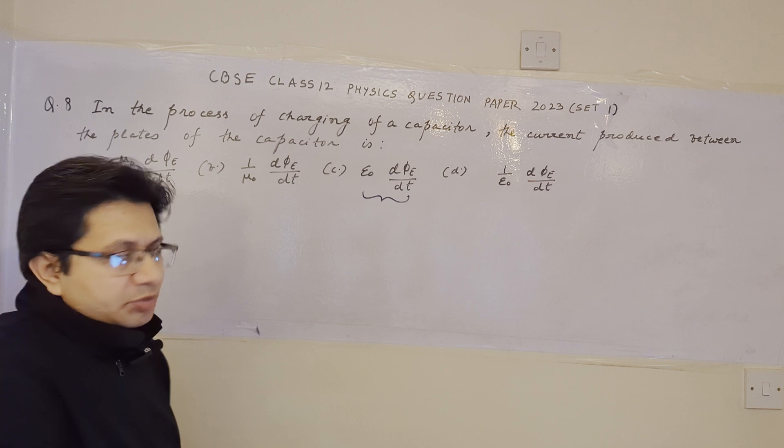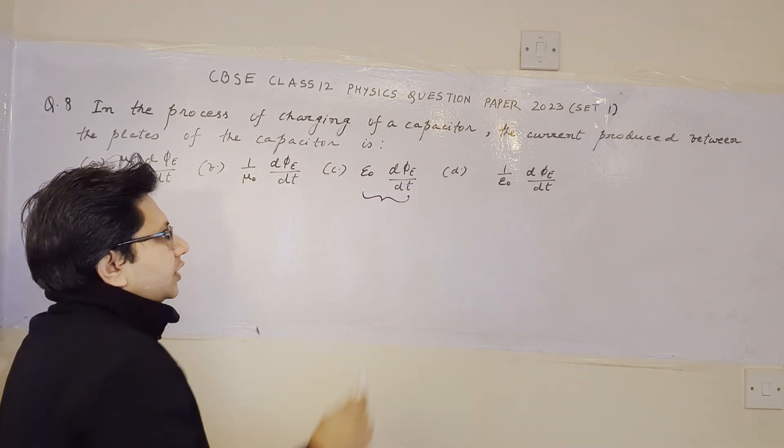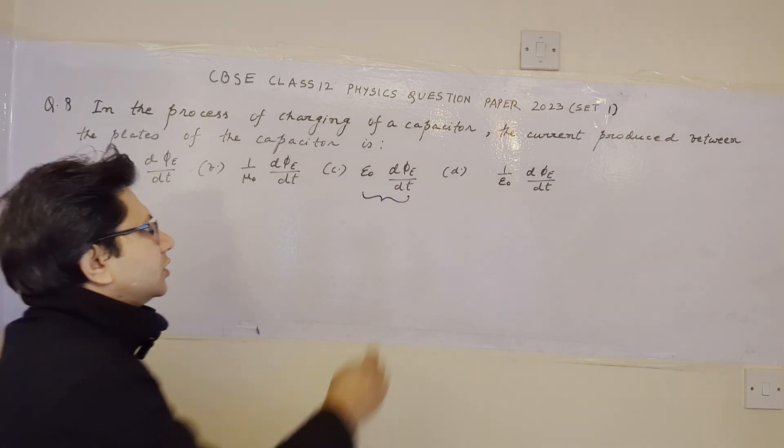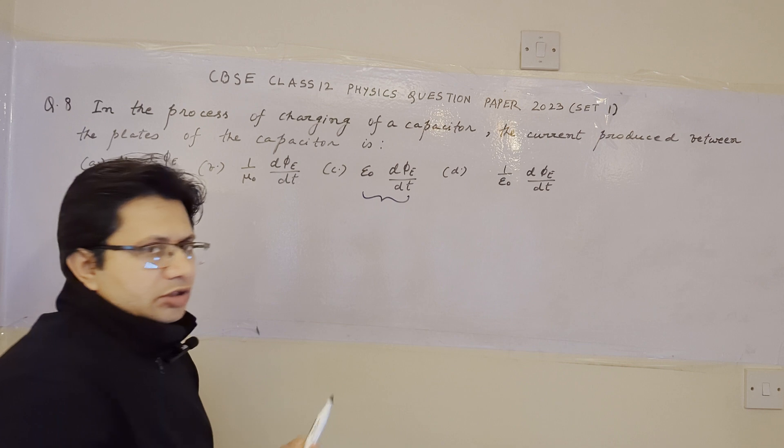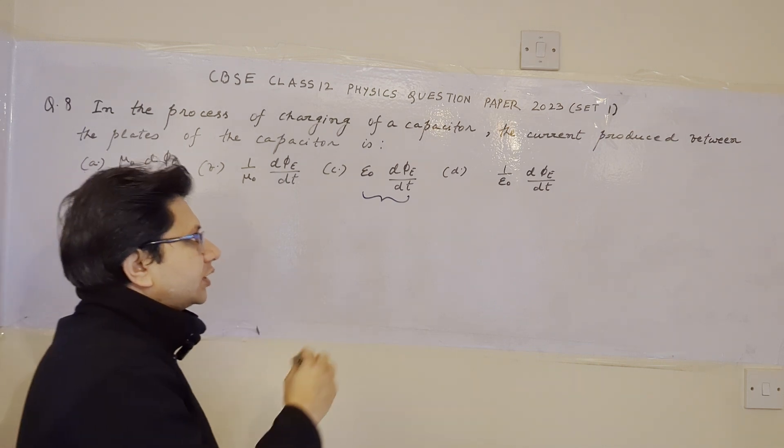where epsilon0 is the permittivity of free space, and phi sub e is the flux corresponding to electric field. Electric flux, this is the electric flux here.